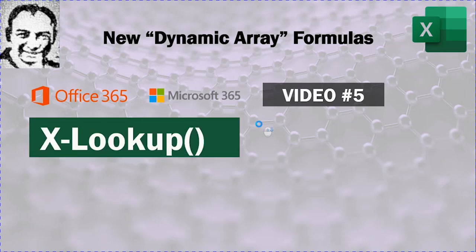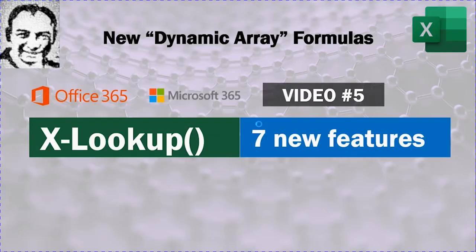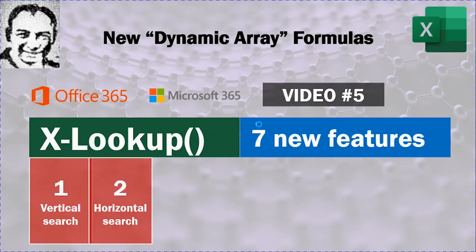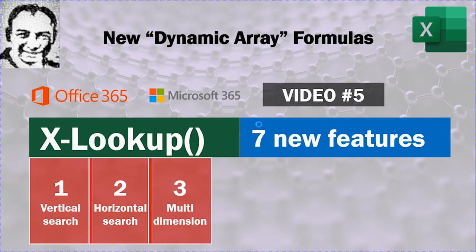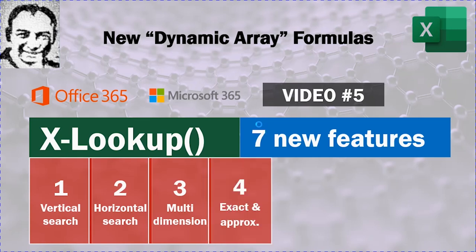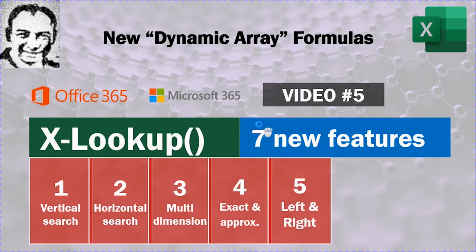We are going to look at the XLOOKUP formula — the formula replacing the current VLOOKUP and also the HLOOKUP. We'll cover seven new features. The first two are vertical search and horizontal search; one formula can do both. You can also perform a multi-dimension search in both directions at the same time, and we'll look at exact and approximate match.